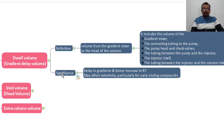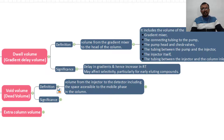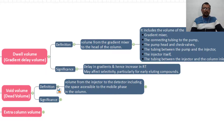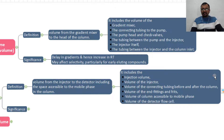The second term is void volume. The void volume is also known as the dead volume. The void volume is the volume from the injector to the detector, including the space accessible to the mobile phase in the column. It starts from the injector and ends at the detector, and includes the space inside the column which can be occupied by the mobile phase.